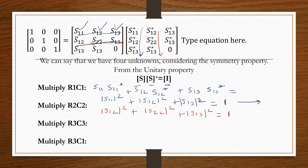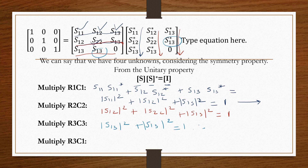Next, we multiply row 3 by column 3. After multiplication, because S33 = 0, we get |S13|² + |S13|² = 1, which gives 2|S13|² = 1, or |S13|² = 1/2, so S13 = 1/√2.